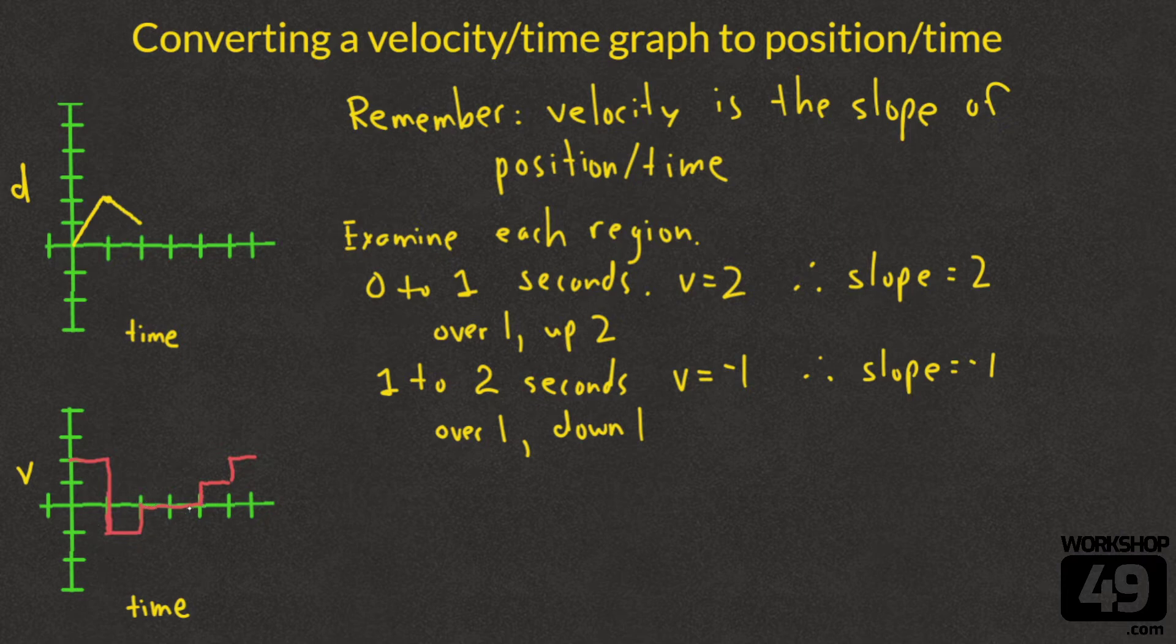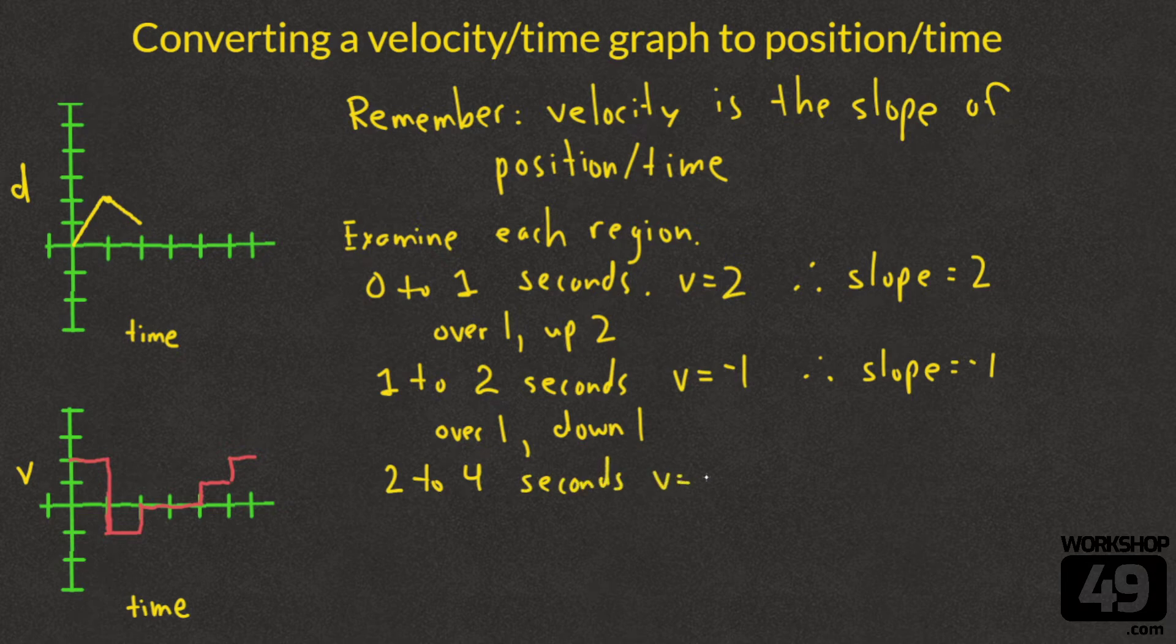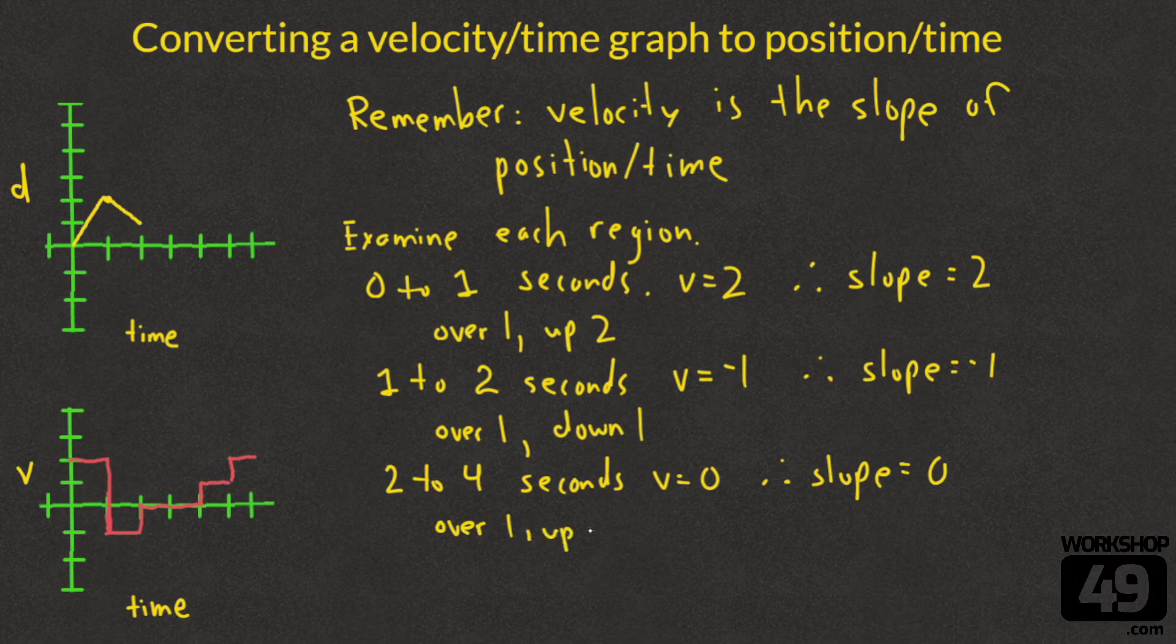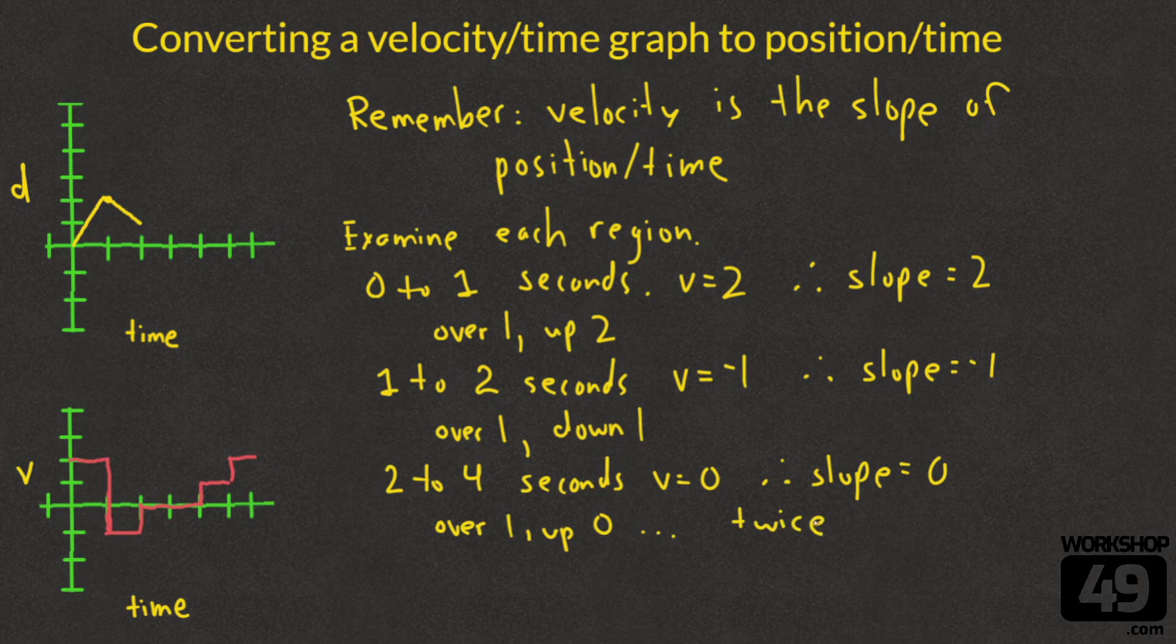Now we can do 2 to 3 seconds, but we can see that it's the same as 3 to 4 seconds. So we can do 2 to 4 seconds as one nice step here. Because they're both the same, it's a flat line. Velocity is 0, the slope equals 0, which means we're going to go over 1 up 0. We're not going to go up or down, and we're going to do this twice.